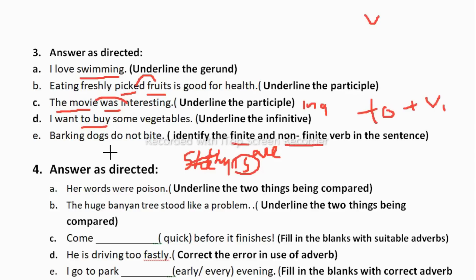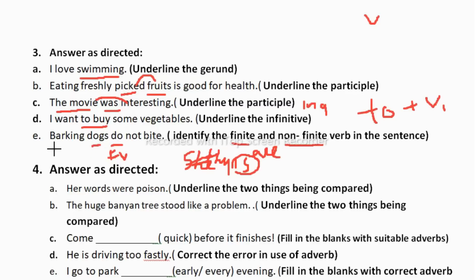'Barking dogs do not bite — identify the finite and non-finite verb.' Finite verbs change based on tense and subject. Here 'do' is the finite verb: with the plural subject 'barking dogs' we take 'do,' but with the singular 'barking dog' we would take 'does.' So 'do' is the finite verb. 'Barking' is the non-finite verb — it is a present participle because 'dog' is a noun and participles act as adjectives before nouns. If you do all 5 bits in question 3, you get 5 marks.